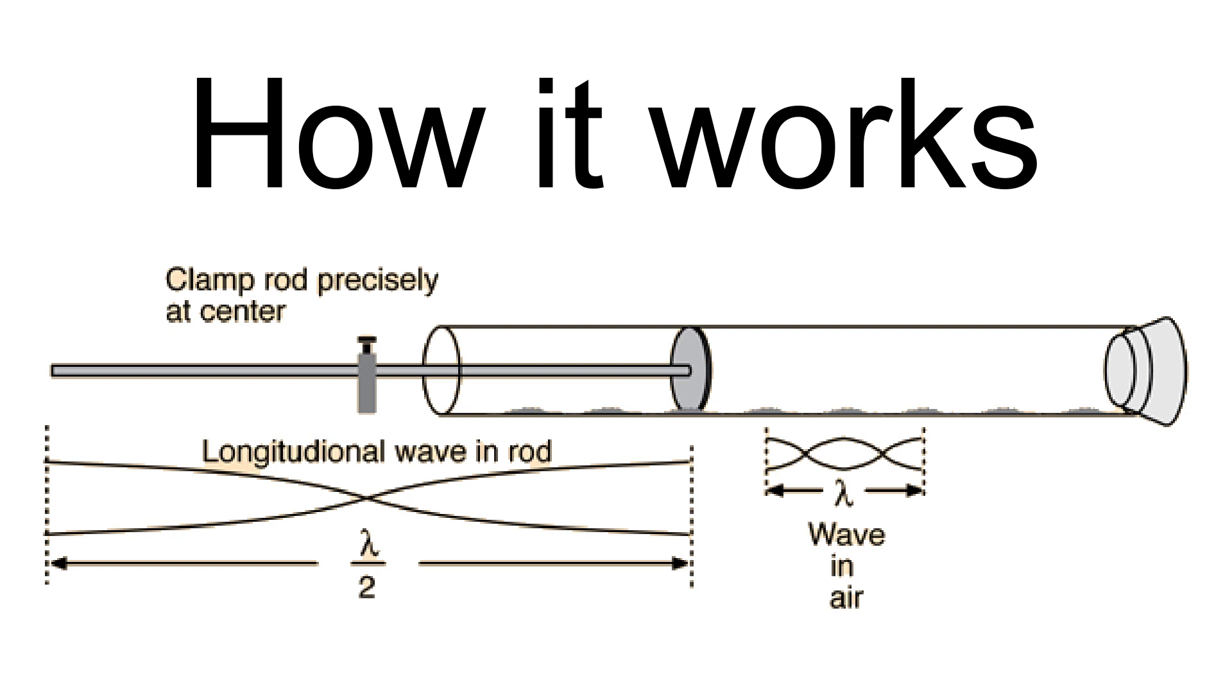Modern demonstrations usually use a loudspeaker attached to a signal generator producing a sine wave. The other end of the tube is blocked by a movable piston which can be used to adjust the length of the tube.